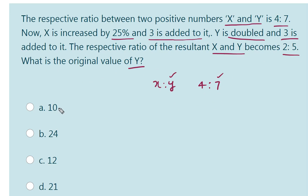If you observe the answers, 10 is not a multiple of 7, 24 is not a multiple of 7, 12 is not a multiple of 7, only 21 is a multiple of 7. So the correct answer is 21.